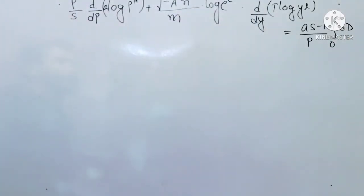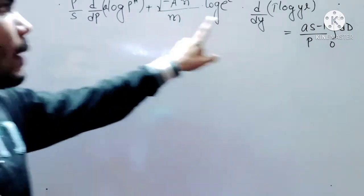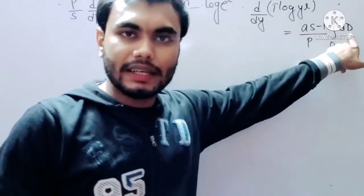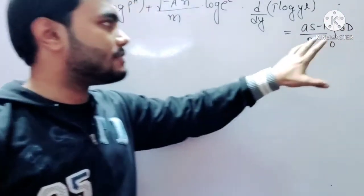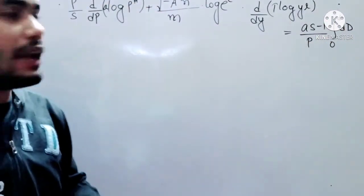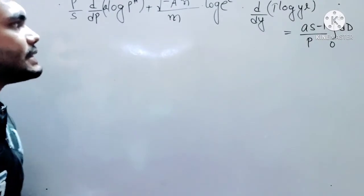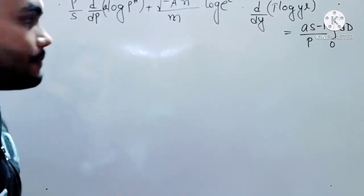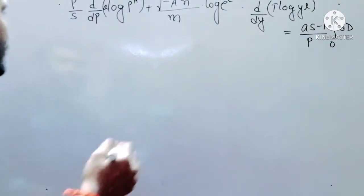Here I want to tell you that p, y, and capital D are the variables. All the other things written here — a, s, h, n, l, t — I am treating them as constants.